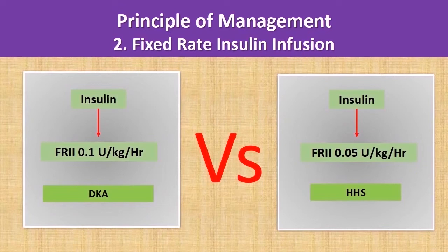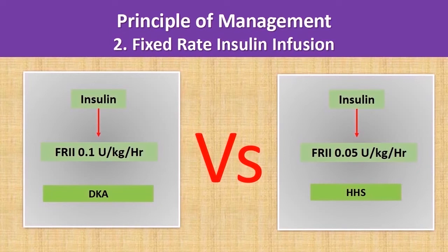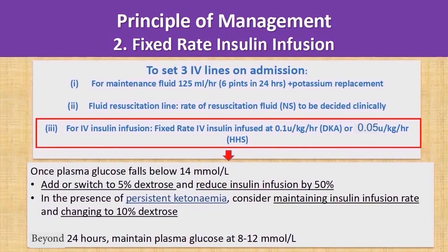To reiterate, the second principle of management is the introduction of fixed-rate insulin infusions. The insulin infusion rate is higher in DKA at 0.1 unit/kg/hour, as opposed to HHS where it is much lower at 0.05 unit/kg/hour. This is because HHS subjects are much more sensitive to insulin, and the key driver for HHS is marked hyperglycemia. Even though it may sound counterintuitive, the body requires glucose to help clear serum ketone bodies.